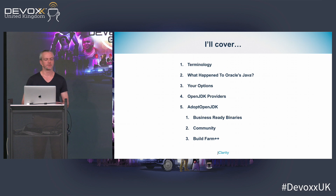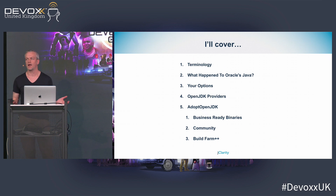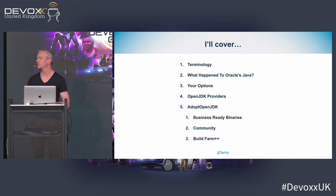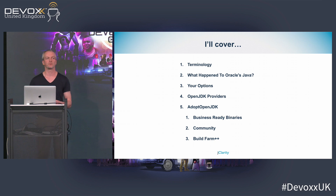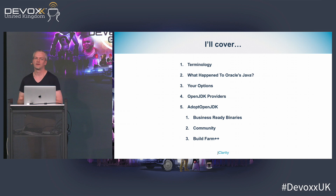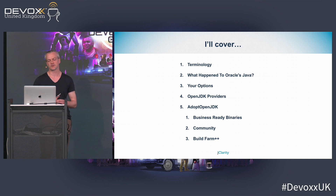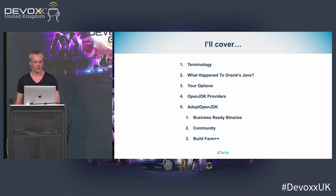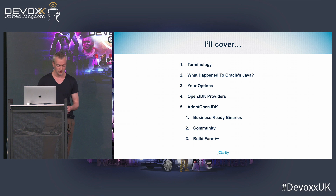What I'm going to cover today: some quick terminology, what happened with Oracle's Java, what options you have going forwards — some of them include paying some people some money, some of them include running away screaming, others involve you actually having to make an informed choice and I'll try and help you walk through that. Then I'm going to tell you a lot about Adopt OpenJDK because, again, I'm biased.